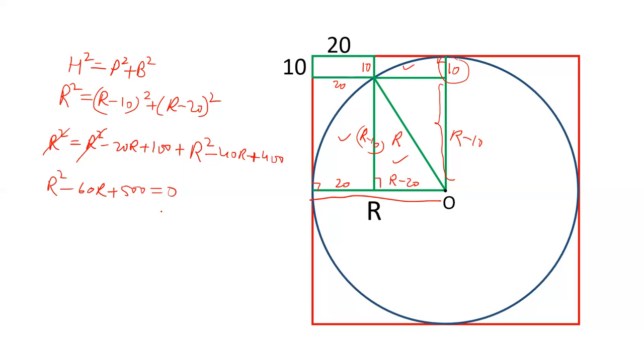This is a quadratic equation. To solve the quadratic equation, take two numbers whose product will be 500 and sum will be 60. And such two numbers are 50 and 10. Take R common from this R minus 50, take 10 common from this R minus 50.